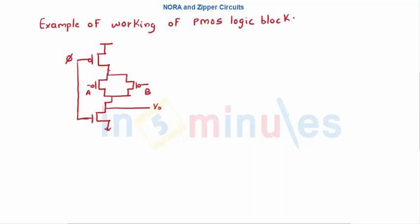If you want to understand another example of working of PMOS logic block, here we can quickly see PMOS, NMOS given by phi, and A and B connected in parallel. Output is taken between the PMOS logic and the NMOS logic.